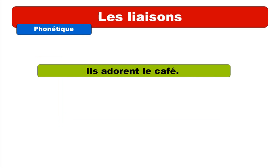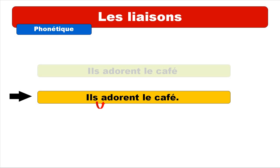So the idea of les liaisons is that if you get a simple sentence like this one — ils adorent le café — you could pronounce it like that, with each word separately: ils adorent le café. But usually, French people tend to make this link, as you can see here, between ils and adorent le café. The reason for that is that adorent starts with a vowel, and in this case it's possible to make this small link between the S and the A.